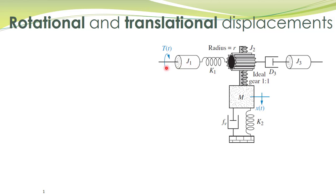When a torque is applied to this shaft, there is an angular displacement in this shaft, and that angular displacement is transmitted over here. Here we have a rack and pinion arrangement. This arrangement converts the angular displacement in this pulley to linear displacement in this rack. So this mass has a linear displacement x(t). Here we have a linear spring and a linear damper.